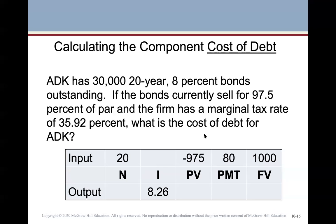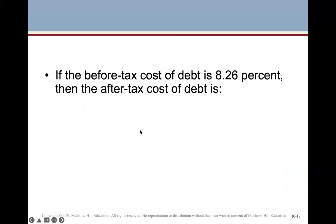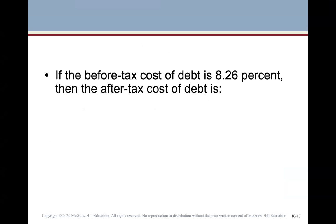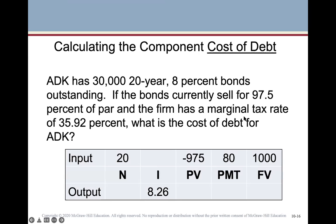The after-tax cost of debt is 8.26% multiplied by (1 minus 0.21). Note: the marginal tax rate and the corporate tax rate are not the same thing. What we use is the corporate tax rate, which is a flat 21% in the United States. Canada and other countries are different. Generally the question will give you the tax rate — do not use the marginal tax rate.